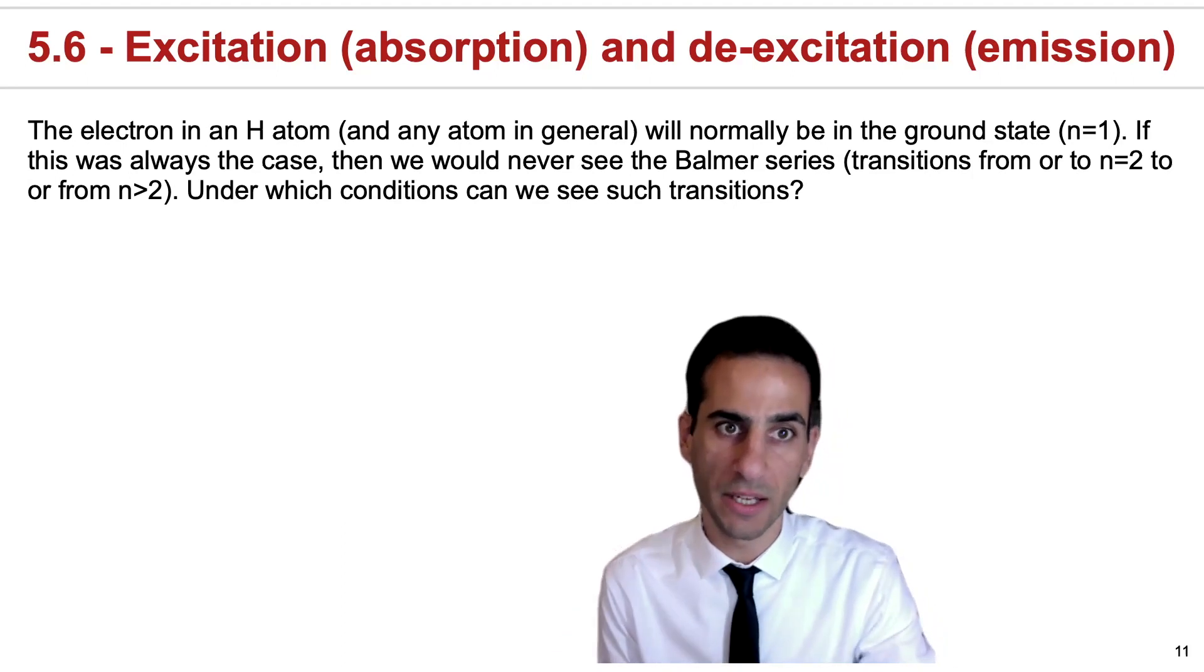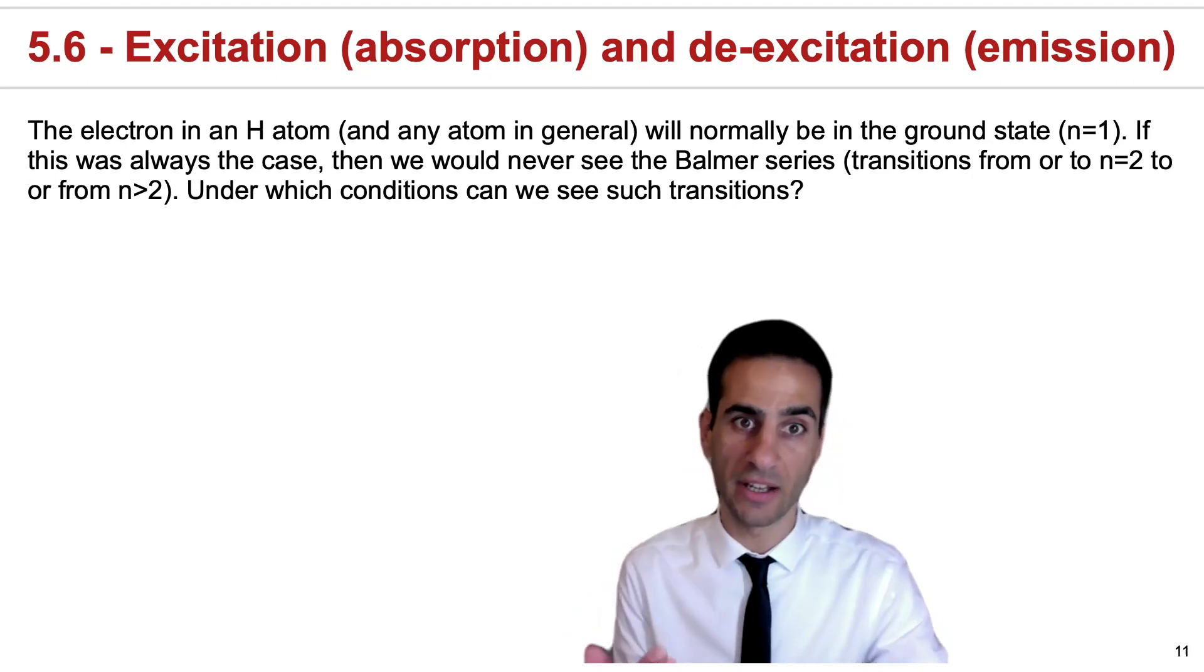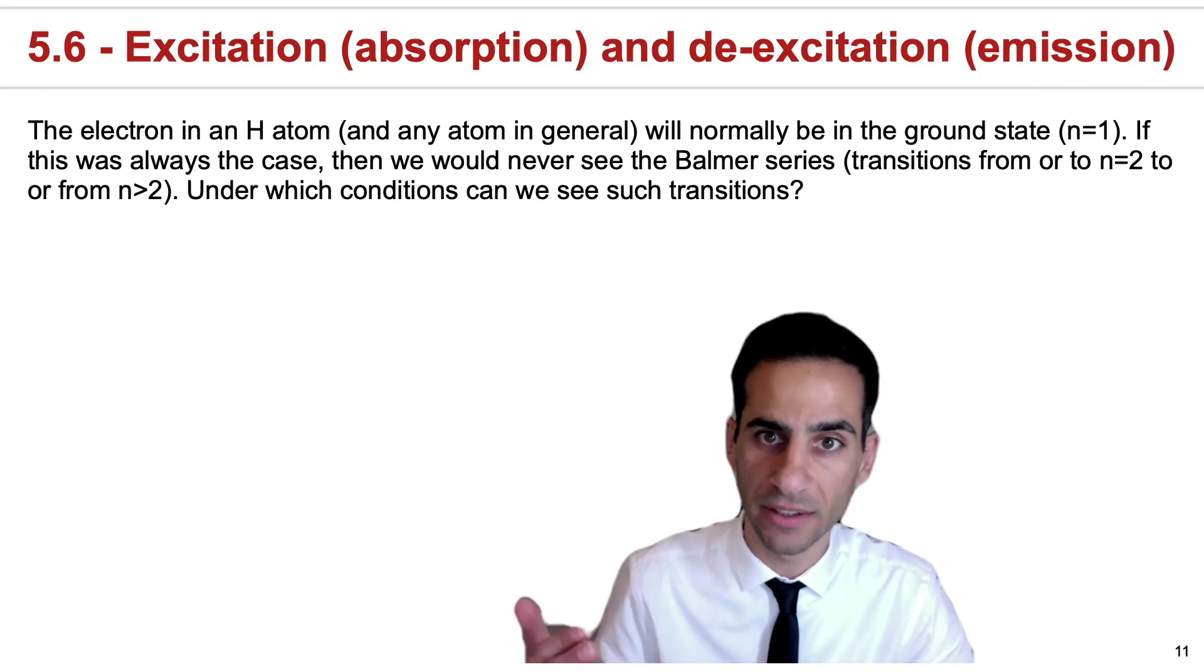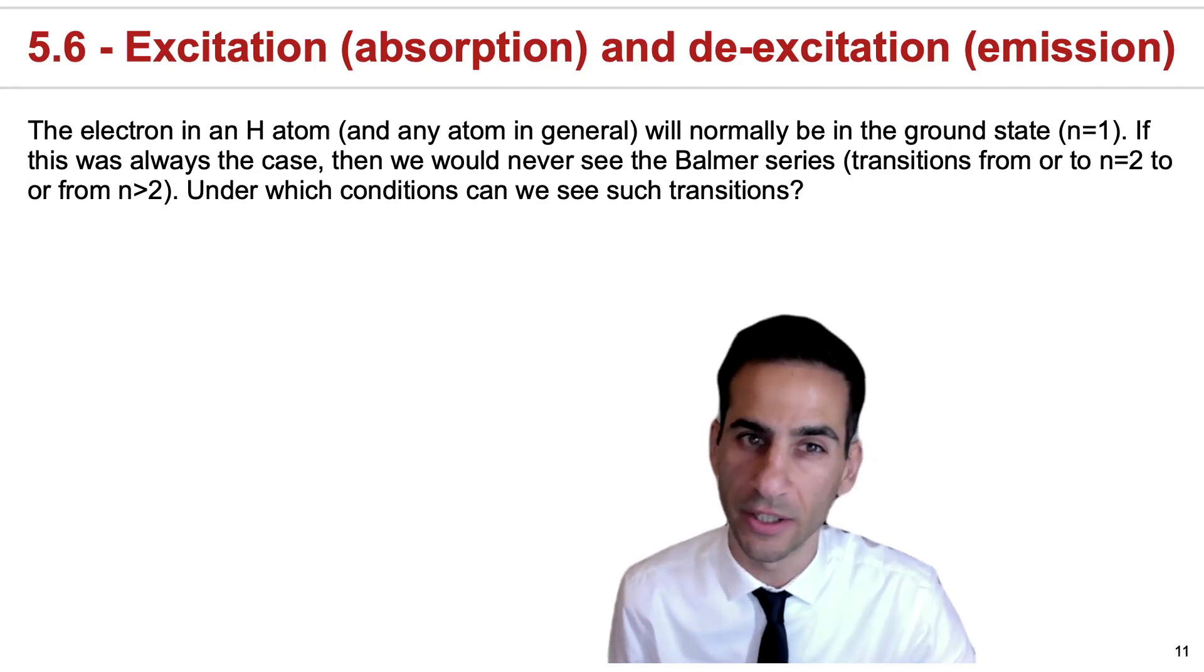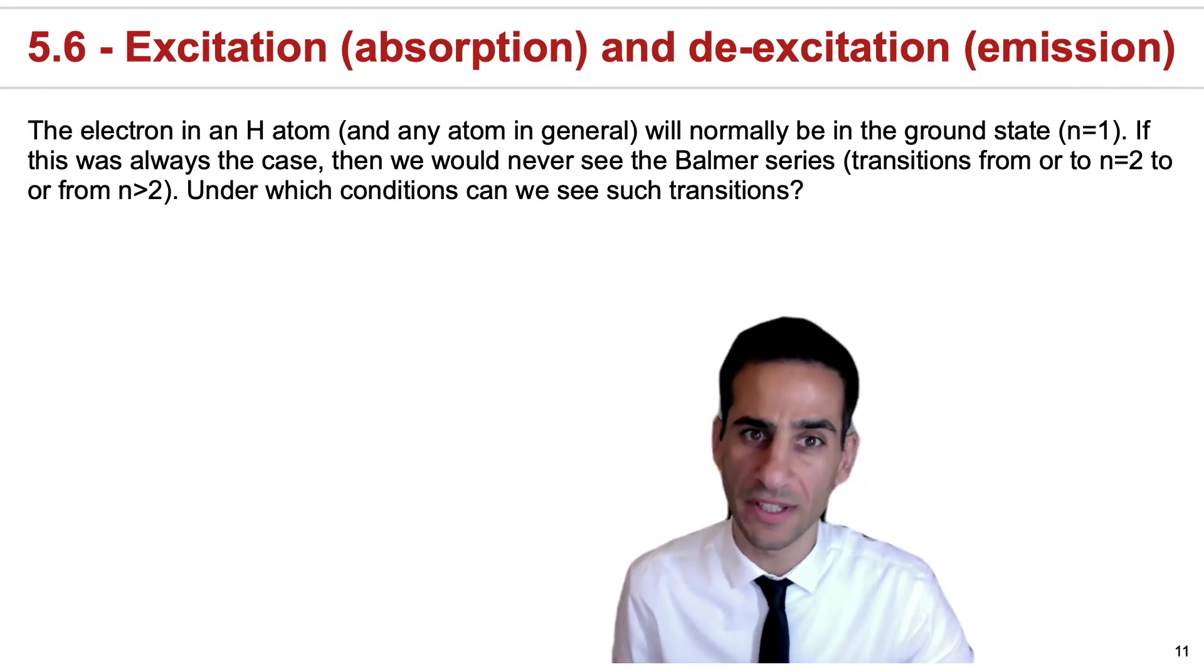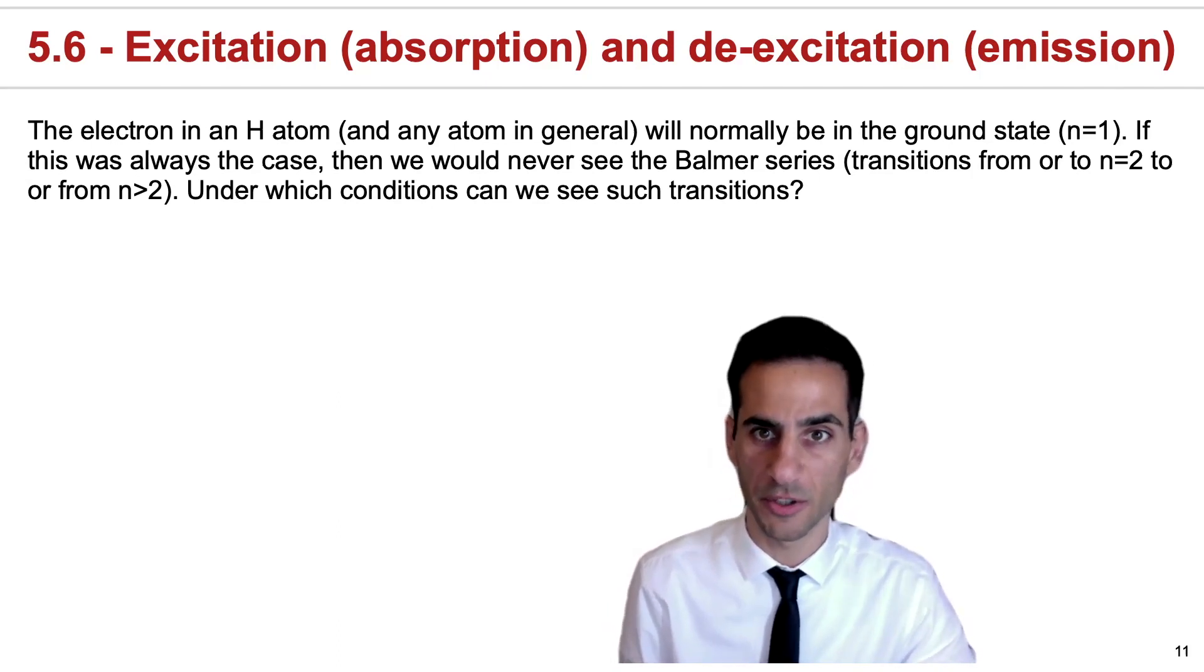As with any other system in the universe, an electron in an H atom will naturally tend to be on the lowest energy state. That's the ground state, or n equals 1. If this was always the case, though, how could we ever see Balmer transitions?